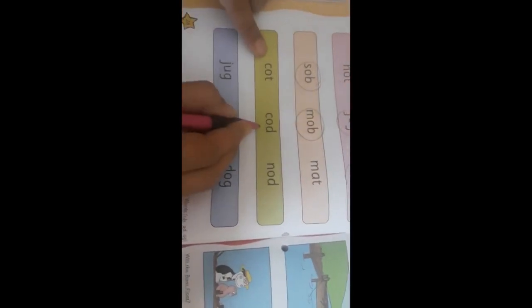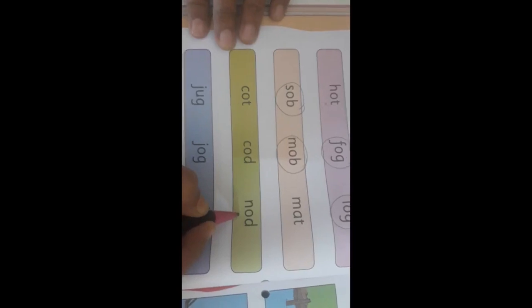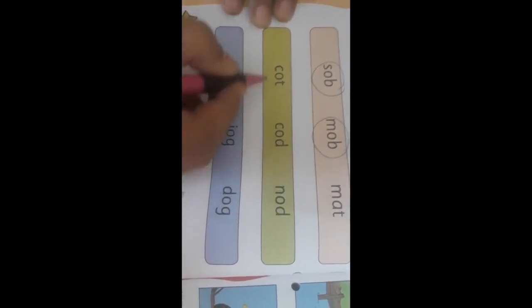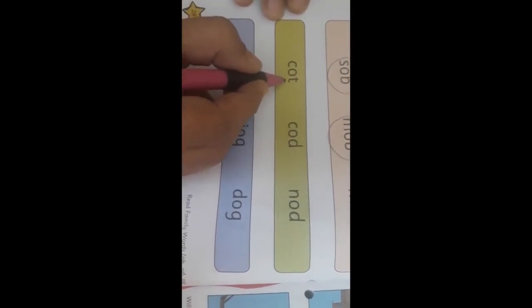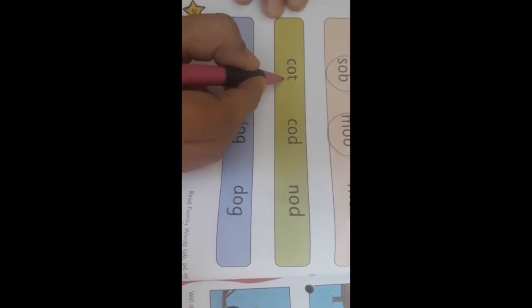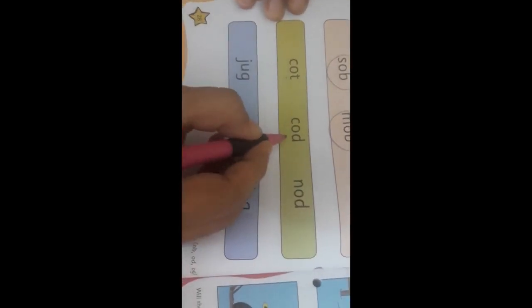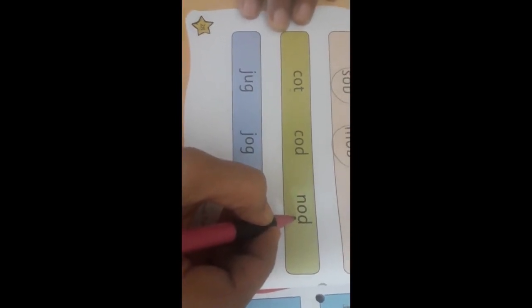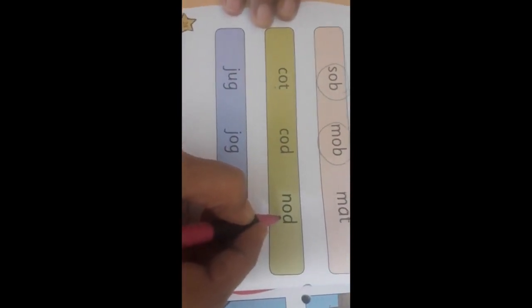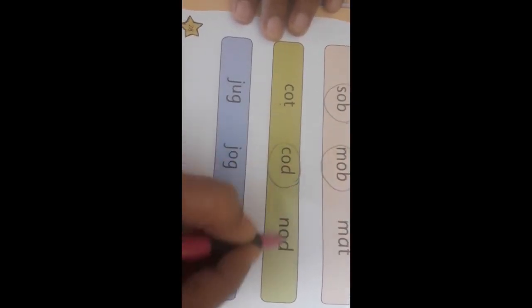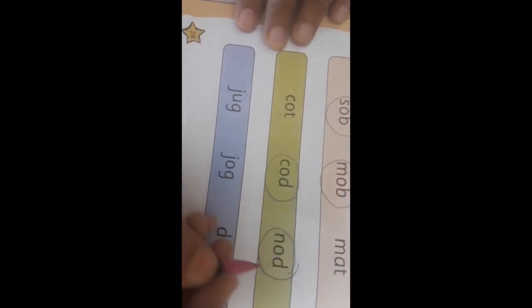Now cot, cod, nod. So which two words are similar? Is cod rhyming with cot? No, because here there is a different sound. Cod and nod, is it sounding similar? Yes, because they are rhyming words. Cod and nod, so we are going to circle.